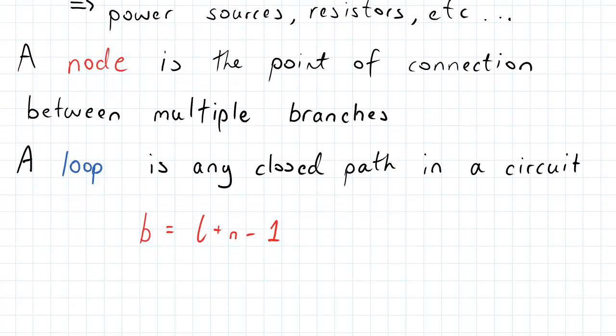The way we can relate the three is through the basic relation: the number of branches B is going to equal the number of loops L plus the number of nodes N minus one.